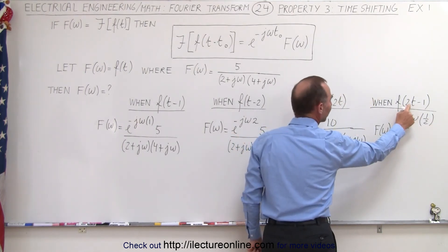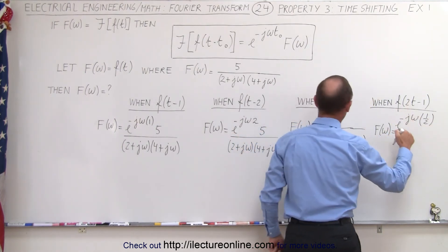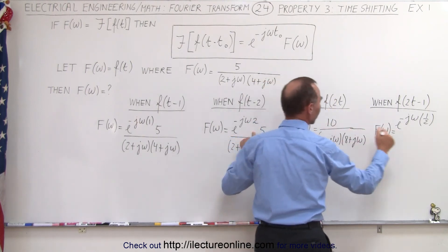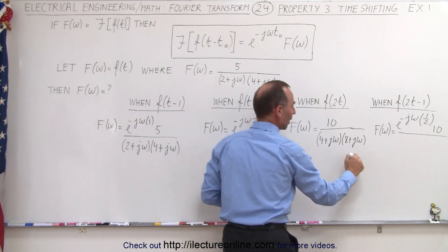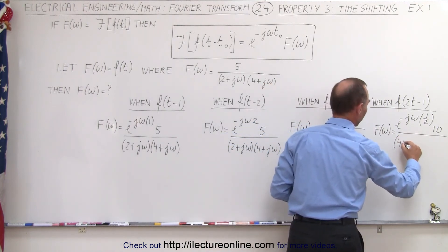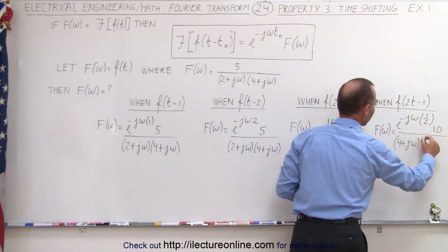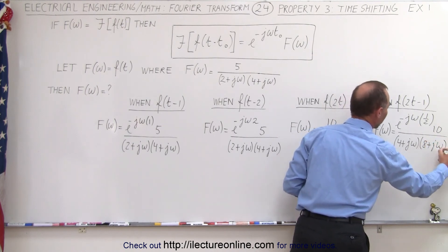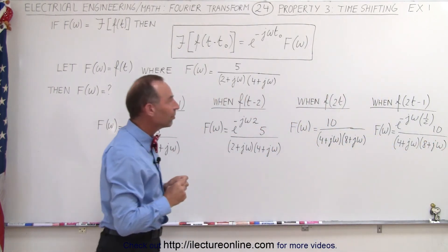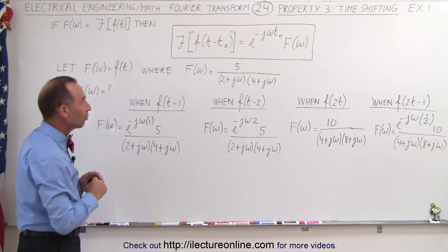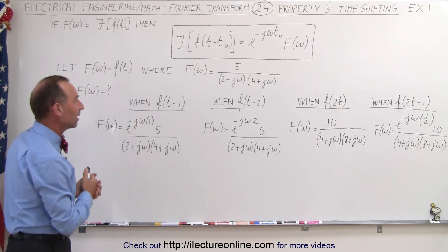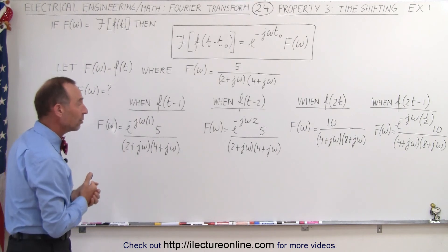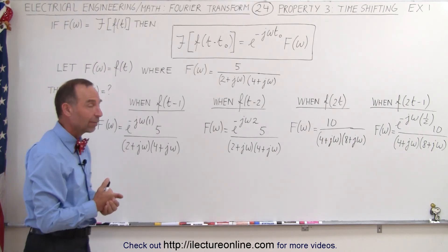So we still have the time scaling with the two t, so then the five now becomes a ten. In the denominator we still have the same changes we have over here: this will be four plus j omega times eight plus j omega. So that gives you some nice examples to see how things change when you take the Fourier transform when you have time shifting and when you have time scaling, and then when you combine the two. So there's some nice examples for you.